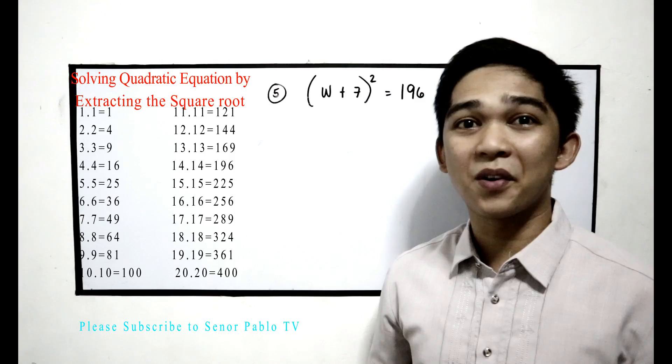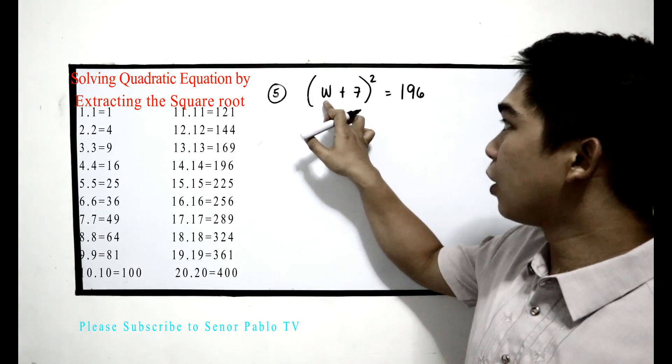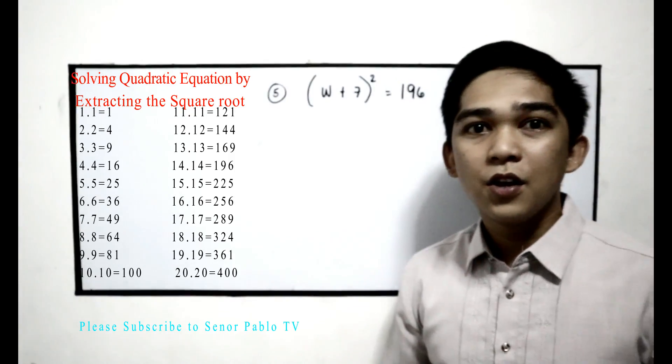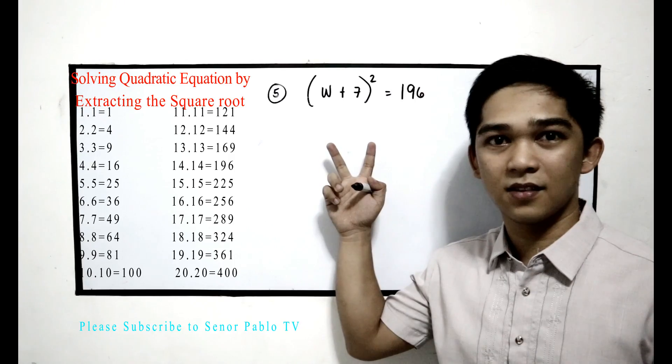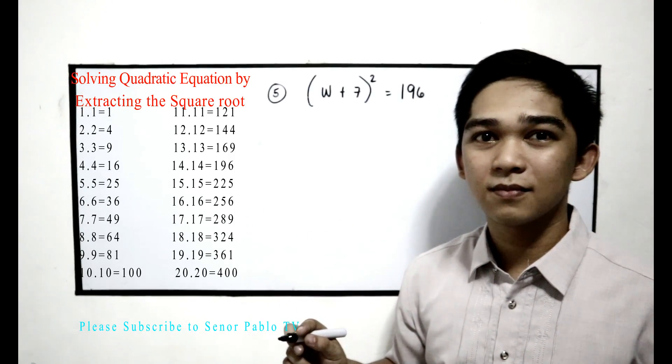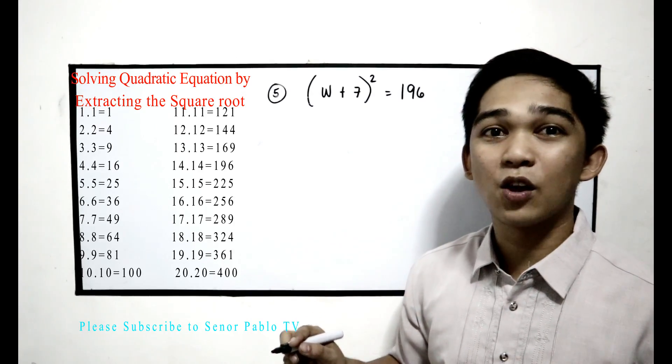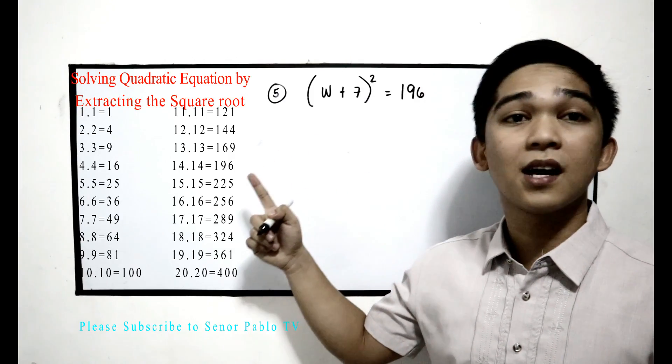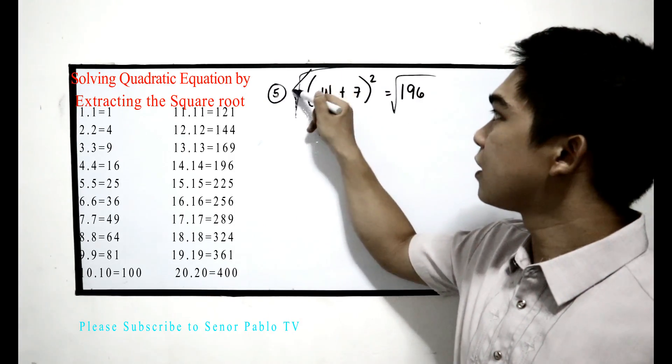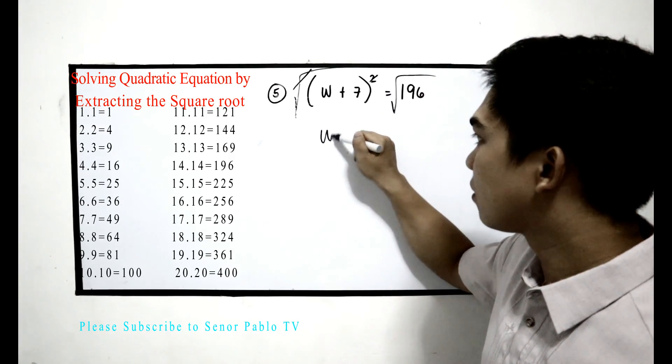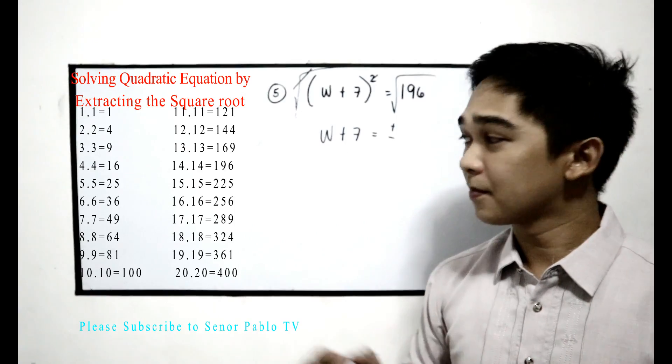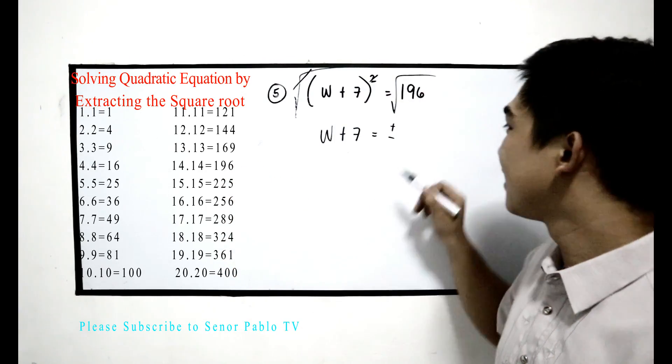And now, our last example, number 5: (w + 7)² = 196. Notice that we have parentheses and 196 is already isolated. Can we now extract the square root? Yes. Also notice that 196 is a perfect square number. Get the square root. The square will be cancelled out. w + 7 = ±√196 = ±14.